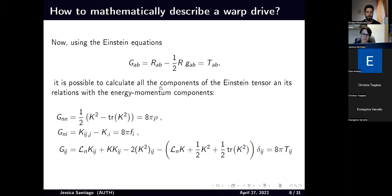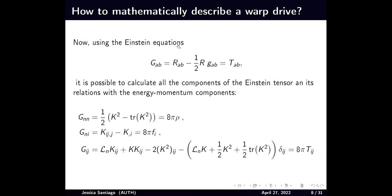Then we can use the Einstein equations to calculate the Ricci tensor, the Ricci scalar, and the energy momentum tensor. The T_00 component is rho, the energy density. T_0i gives the energy fluxes the Eulerian observer is measuring. T_IJ gives the pressures and stresses of this matter. Then you can relate all of them and find what the density rho you need is in order to have the warp drive metric, connected to the extrinsic curvature.